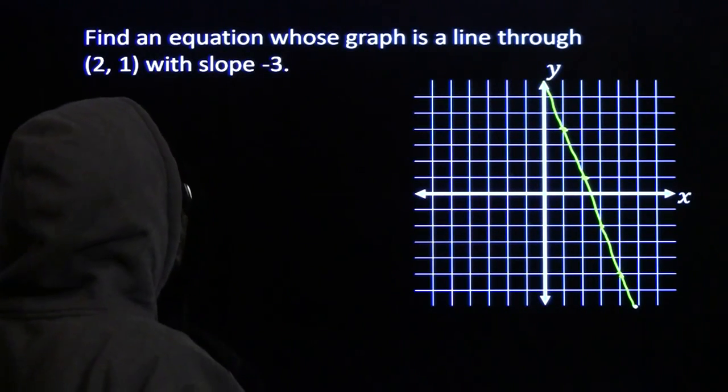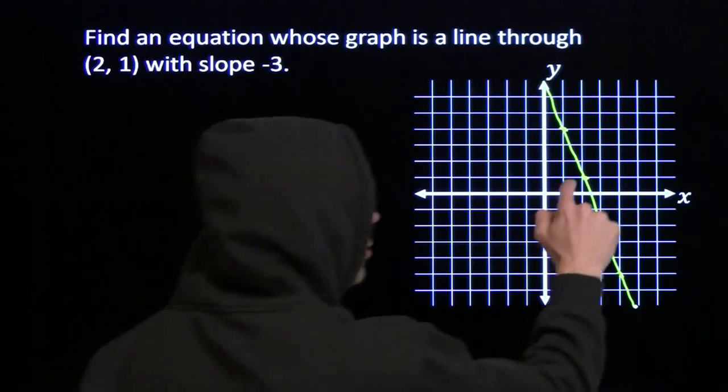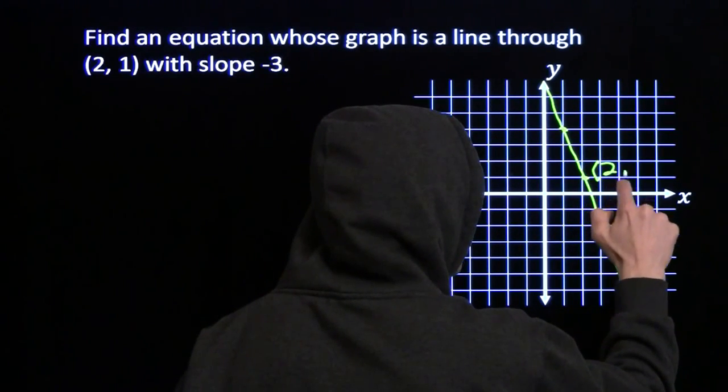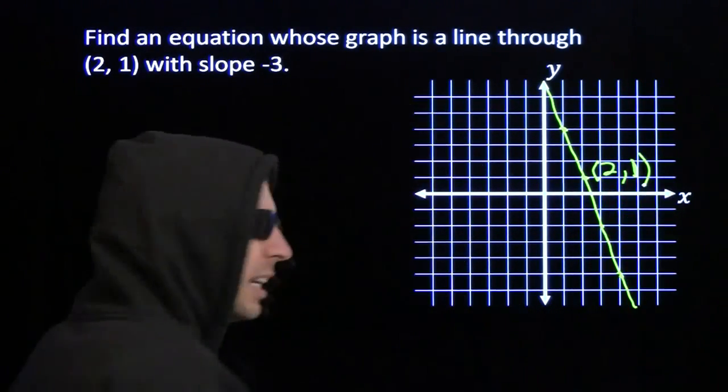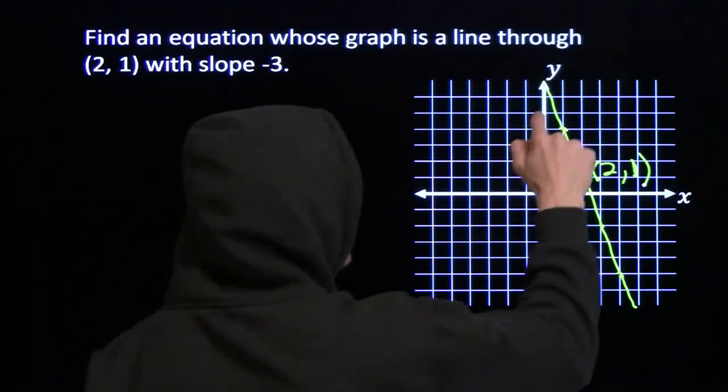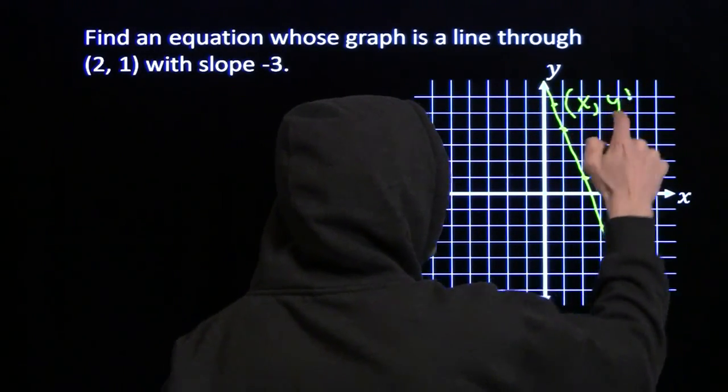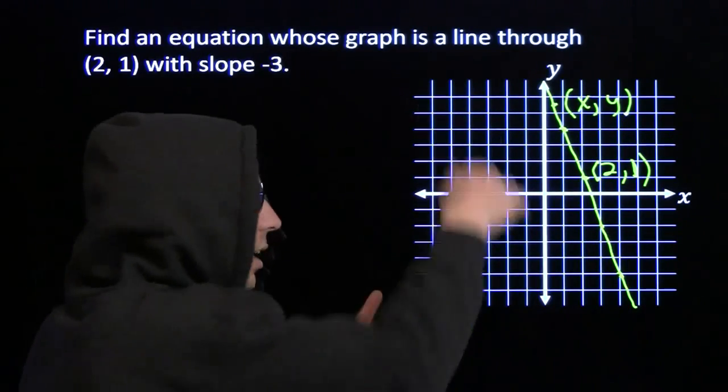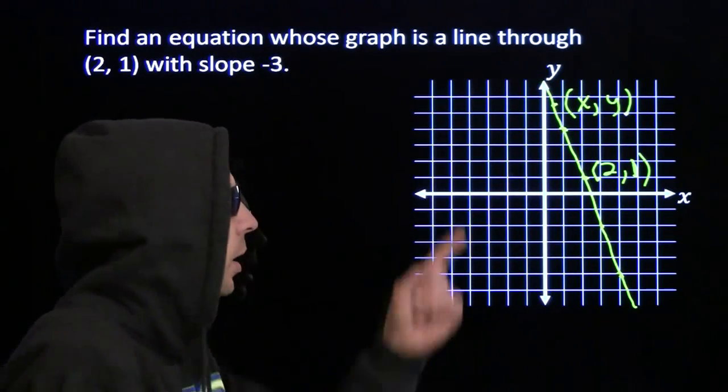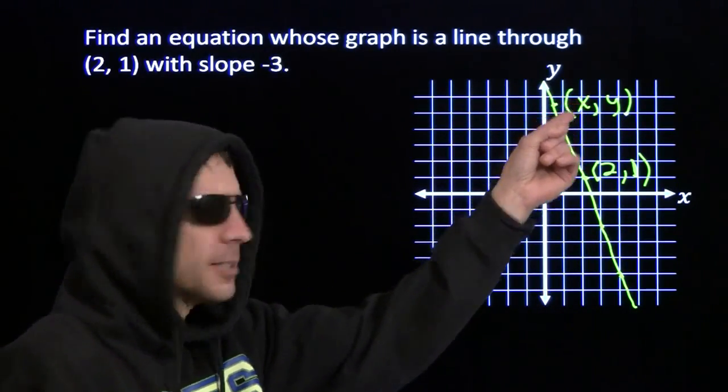But we don't have an equation. Well, we know this point right here. This is (2,1). We know the line goes through this point. Now, imagine we have any other point on the line. We're gonna call that (x,y). And this point (x,y) has to be on the line. Take any other point.